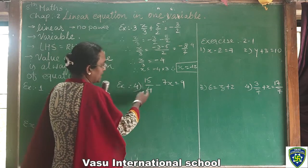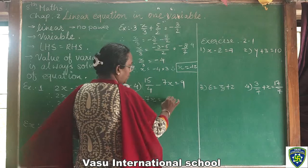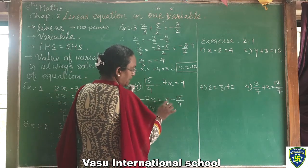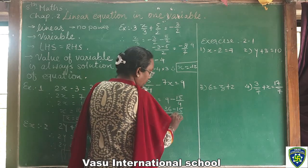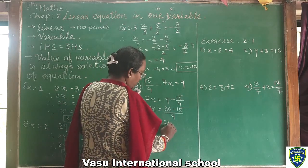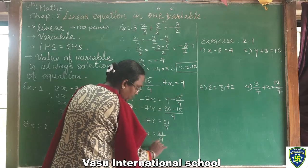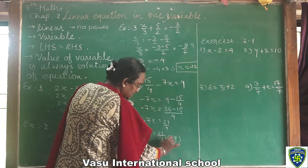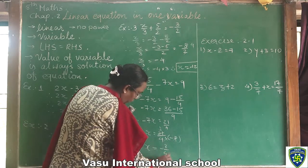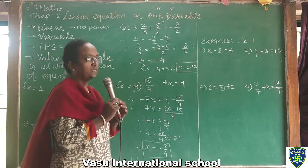Example 4: 15 upon 4 minus 7 upon x equal to 9. We rearrange: minus 7 upon x equal to 9 minus 15 upon 4, giving minus 15 total upon 4. Therefore minus 7 upon x equal to 21 upon 4. Therefore x equal to 21 upon 4 multiplied by minus 1 upon 7. Since 3 sevens are 21, the answer is minus 3 upon 4. So x equal to minus 3 upon 4 is the solution of 15 upon 4 minus 7 upon x equal to 9.